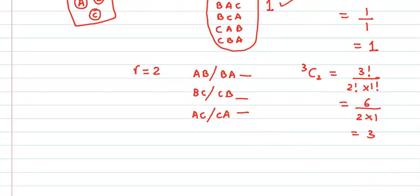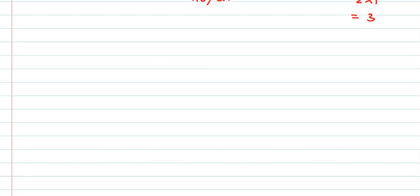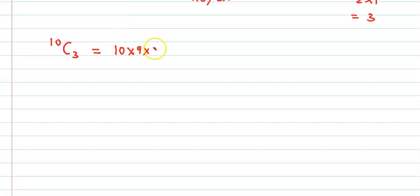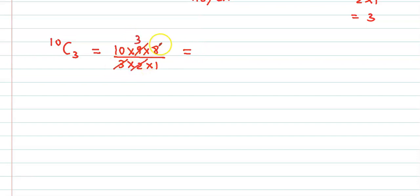nCr को एक shortcut way में भी solve कर सकते हैं। For example, for 10C3: starting with 10, write three terms in the numerator in descending order — 10, 9, 8 — and divide by three factorial, which is 3 × 2 × 1. Simplifying: (10 × 9 × 8) / (3 × 2 × 1) = 720 / 6 = 120. यह direct method है nCr को solve करने का।